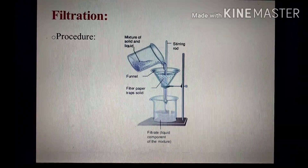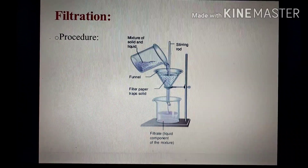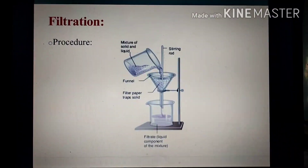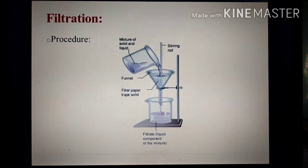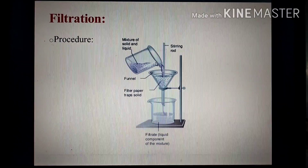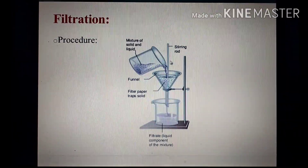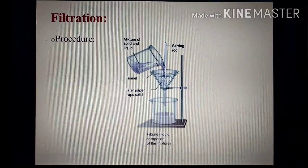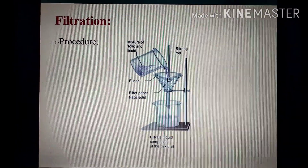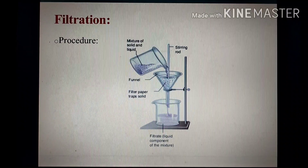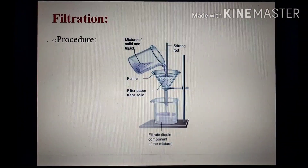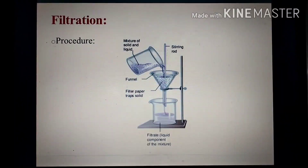Funnel کا جو stem ہے اس کو ہم beaker کے corner کے ساتھ fix کرتے ہیں۔ جب ہم اوپر سے sample ڈالیں تو stirring rod کی مدد سے اس کو shake کرتے ہیں تاکہ سارا material ایک جگہ پہ stuck نہ ہو اور filtration کا process disrupt نہ ہو — ان conditions کا خیال رکھتے ہیں تاکہ filtration کا process اچھے انداز میں proceed کرے۔